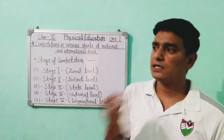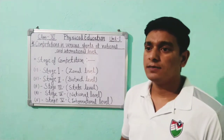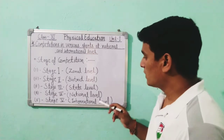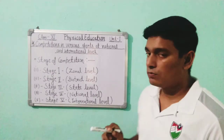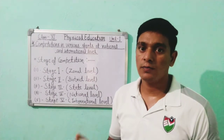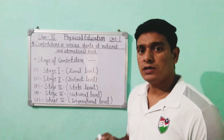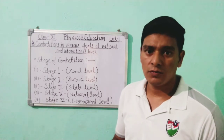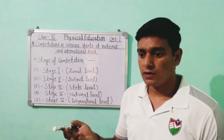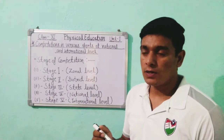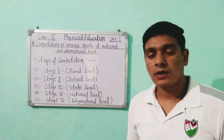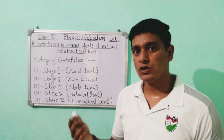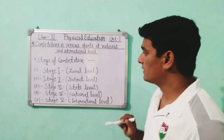At the national level, there are competitions like National Games and Khelo India. At the international level, there are competitions like the World Cup, Olympics, Asian Games, Davis Cup (tennis), and Uber Cup (badminton). In these international competitions, players represent their nation.